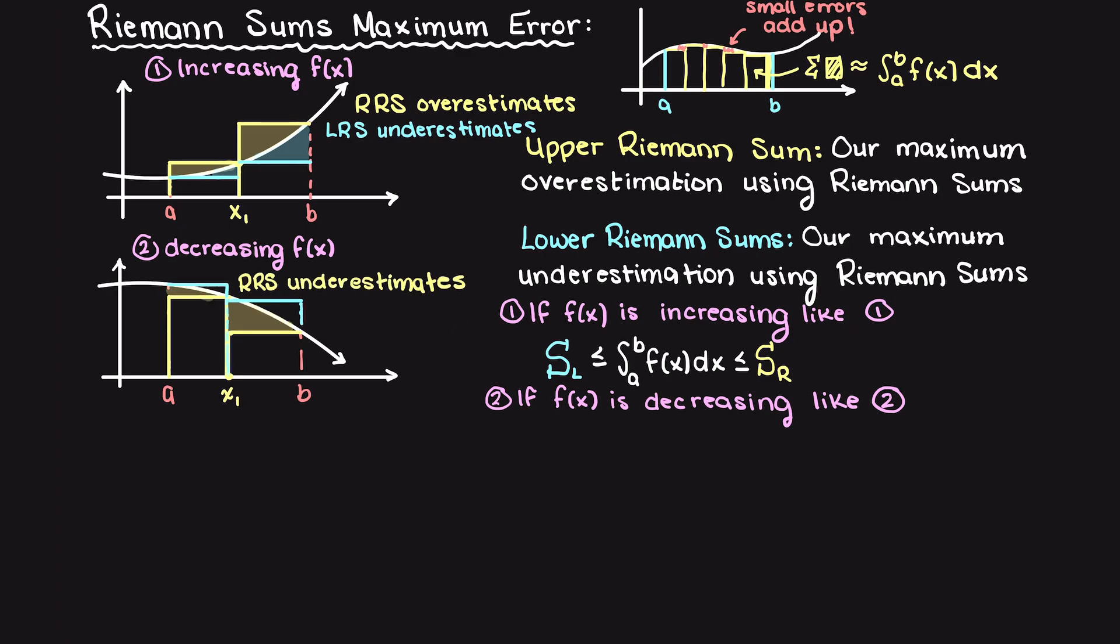This should make sense when sketched out and you can see that here on the left. For these Riemann sums, you want to ensure that the function is monotonically increasing or decreasing. This means that the function is only trending one direction within our bounds of our numerical integration, but we'll talk more about this in our upcoming example videos.